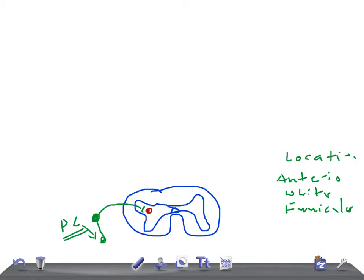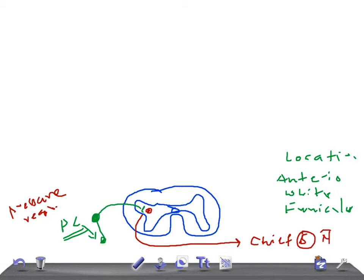The first order neurons are situated in the posterior nerve root ganglion. These fibers receive impulses of crude touch sensation from the pressure receptors. The axons of the first order neurons reach the chief sensory nucleus through the posterior nerve root.